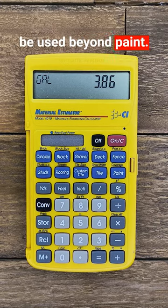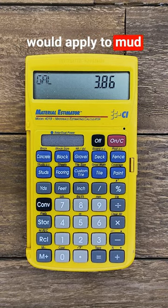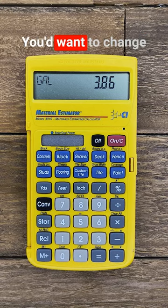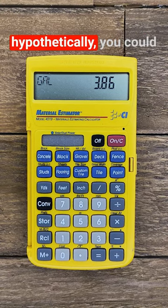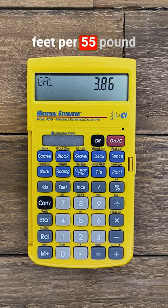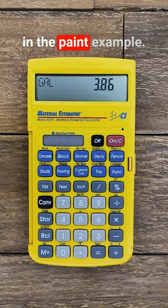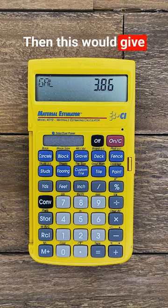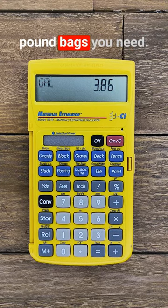And really this trick can be used beyond paint. The same math would apply to mud mix as one example. You'd want to change the coverage, but if hypothetically you could also cover 275 square feet per 55 pound bag of mud mix, like in the paint example, then this would give you the number of 55 pound bags you need.